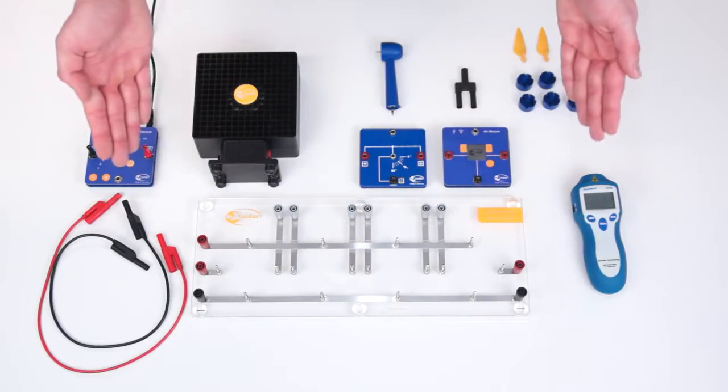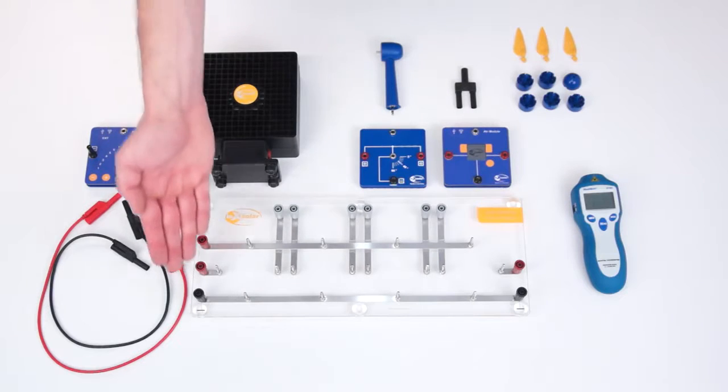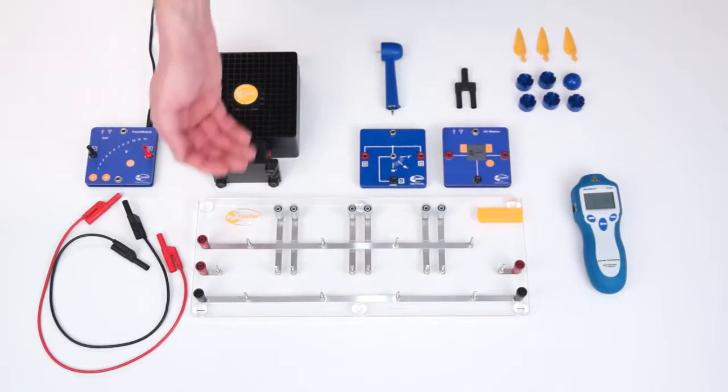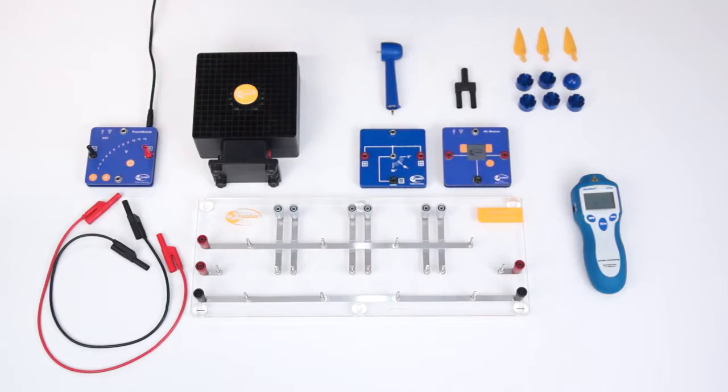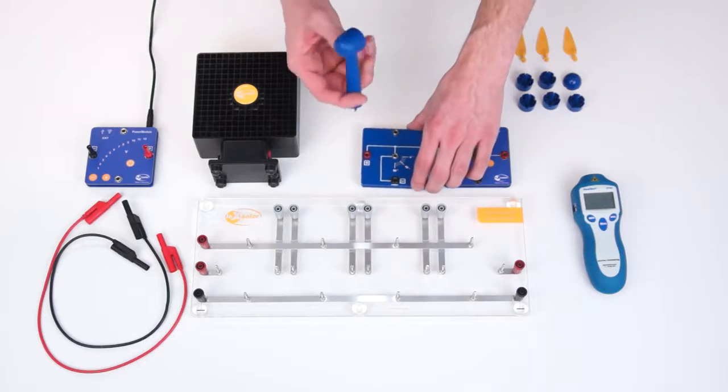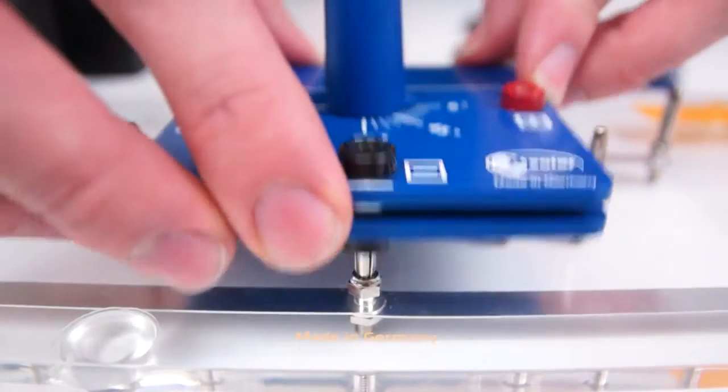Now we have all the equipment together to assemble the unit. First we need the base unit. It has a ground line and provides slots for up to four modules that can be connected in series or parallel. The most important component for the experiment is the model of the wind turbine. For this we first attach the wind turbine to the module plate and then these two elements onto the base unit.